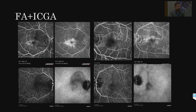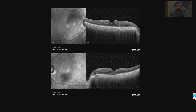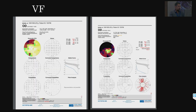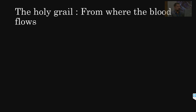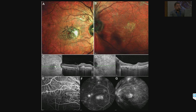Another interesting patient: a lot of leakage on FFA in the posterior pole but ICG shows no problems, ruling out inflammatory disease, and there is absolutely no leakage on OCT. The patient had NVI, no radial pulse, three MIs, and a history of Raynaud's — this was Takayasu's arteritis with ophthalmic artery occlusion.